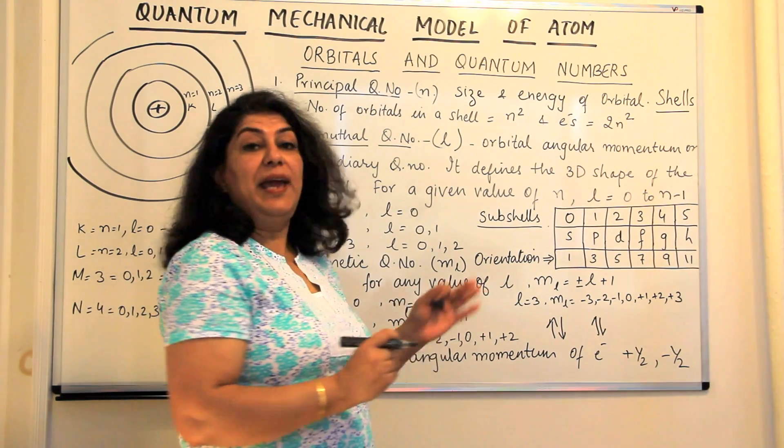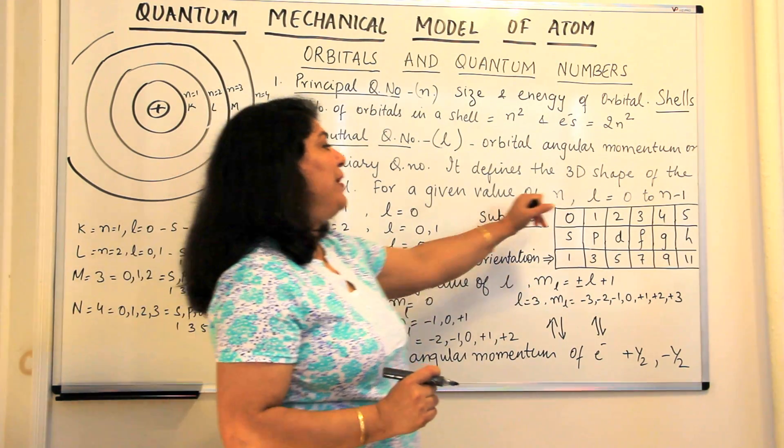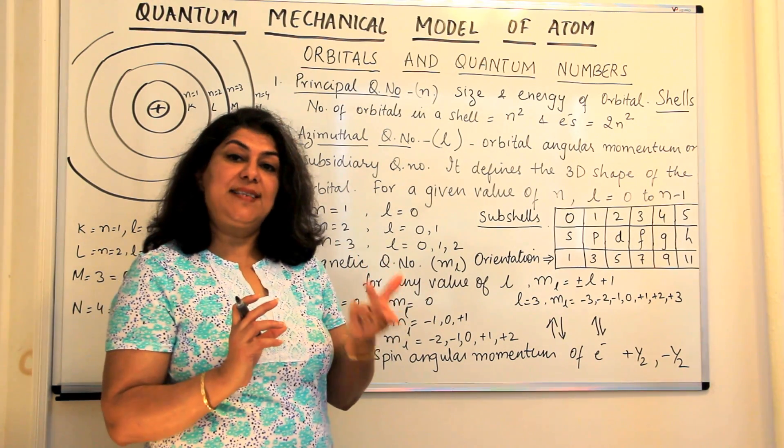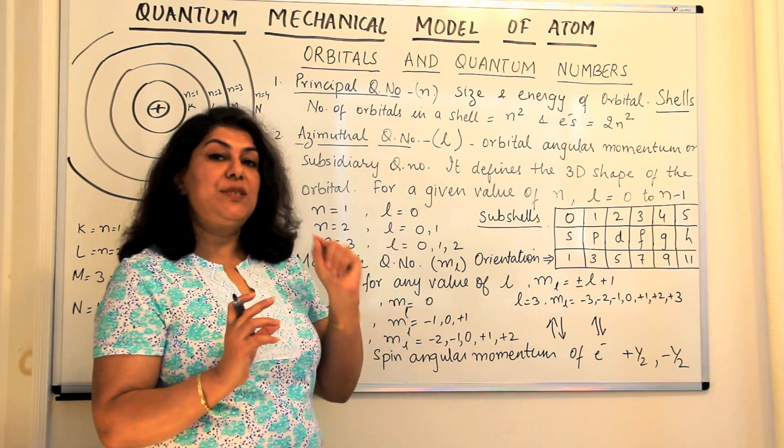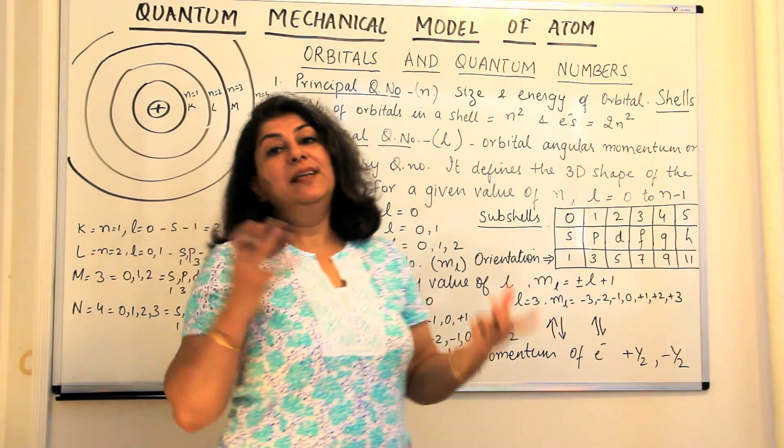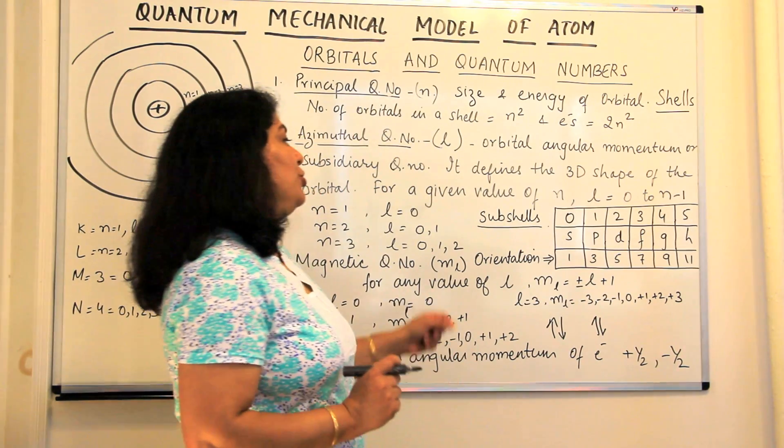For any value of n, the number of values of l range from 0 to n-1. The number of values actually is the same but since the first value is 0, the last value has to be one number less than the number of the shell.